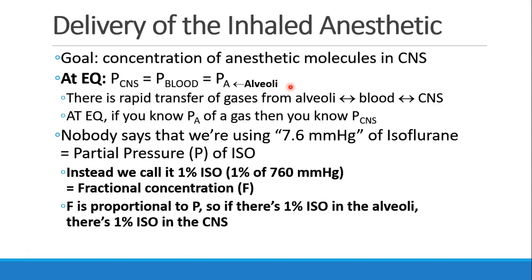So at equilibrium, if you know PA — the partial pressure in the alveoli — then you know PCNS, how much partial pressure there is in the brain.